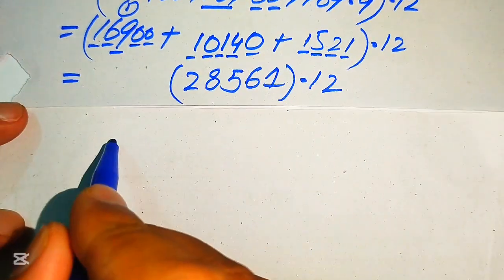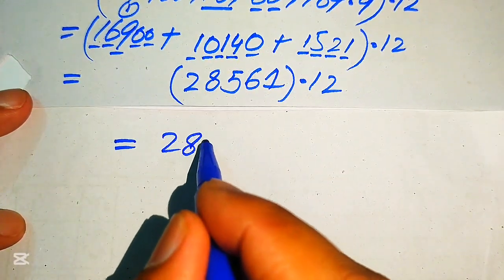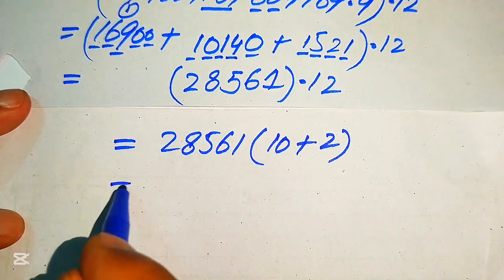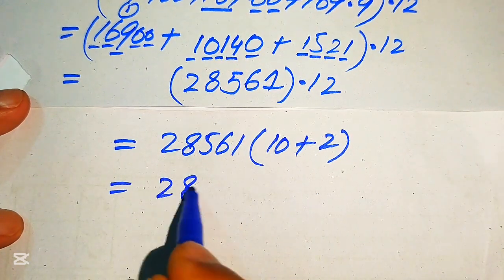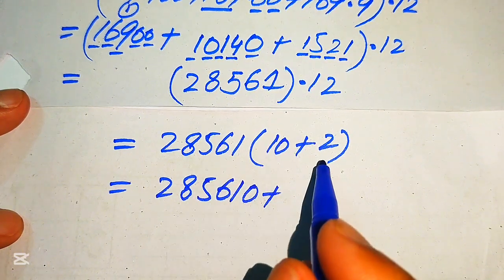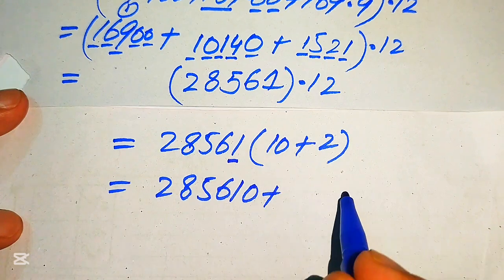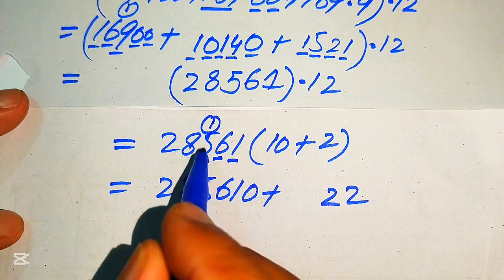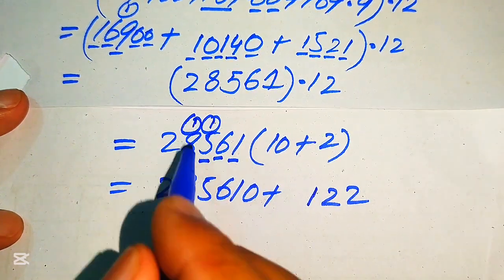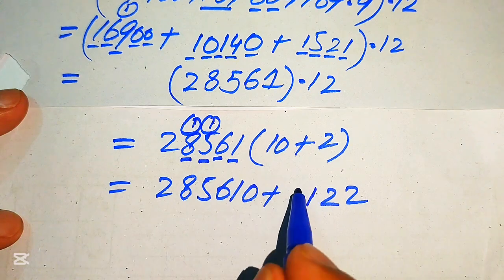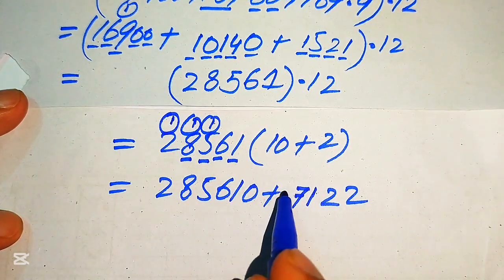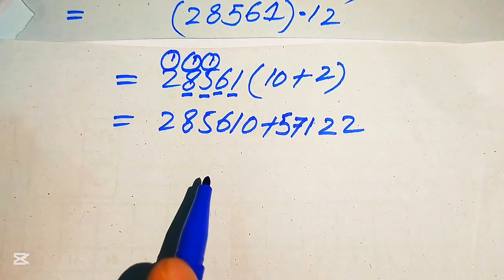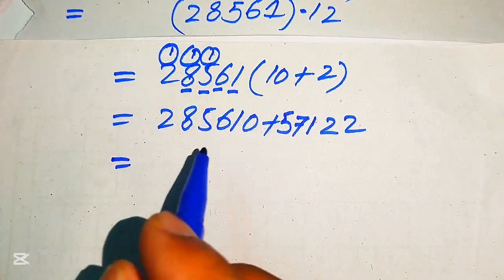To multiply 28561 by 12, we break 12 as 10 plus 2. 28561 × 10 = 285610. For 28561 × 2: 2×1=2; 2×6=12 (write 2, carry 1); 2×5=10+1=11 (write 1, carry 1); 2×8=16+1=17 (write 7, carry 1); 2×2=4+1=5 — giving 57122. We now add 285610 and 57122 to obtain our final answer.